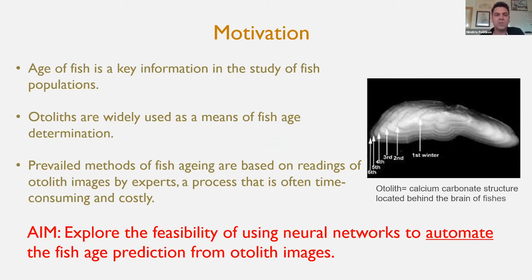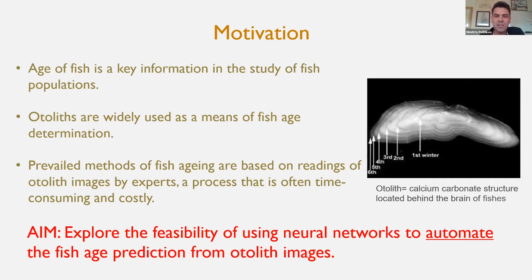Age of fish is a key index in fisheries, providing useful information about the growth rate, mortality, and fishing pressure on fish populations. Otoliths are widely used for fish age determination by counting the annual rings, as you can see in the image. This is a small piece extracted from the head of the fish. This process is very often time consuming and costly, conducted by experts. The aim of this study is to explore the feasibility of using neural networks to automate fish age prediction from otolith images.